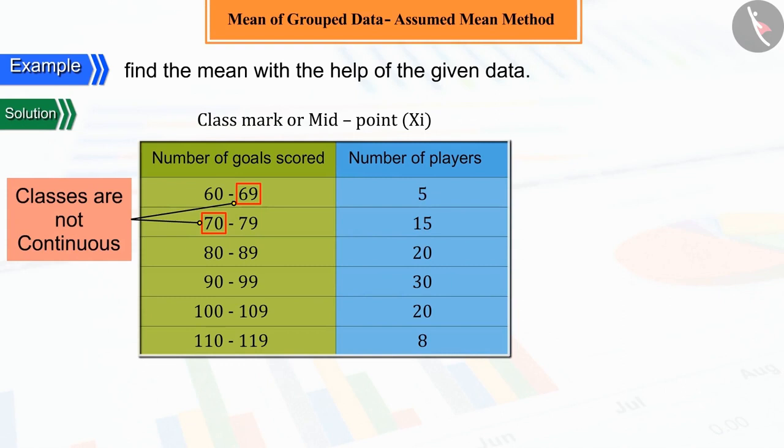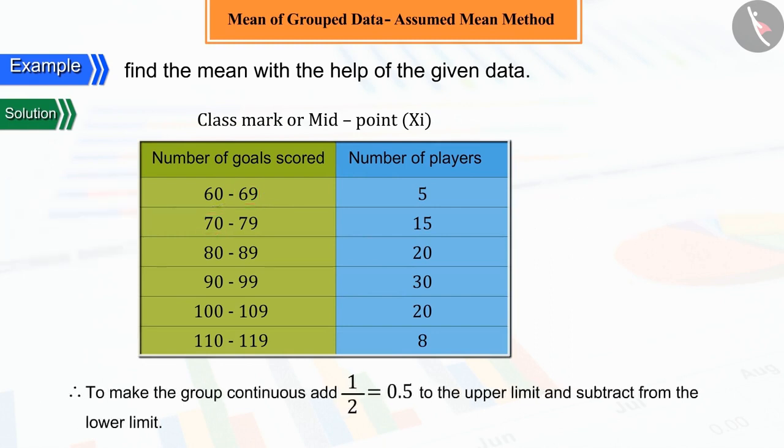Well done! We can see from the table that the difference between upper and lower limits is 1. So to make the class continuous, let's add half that is 0.5 in the upper limit and subtract the same from the lower limit.